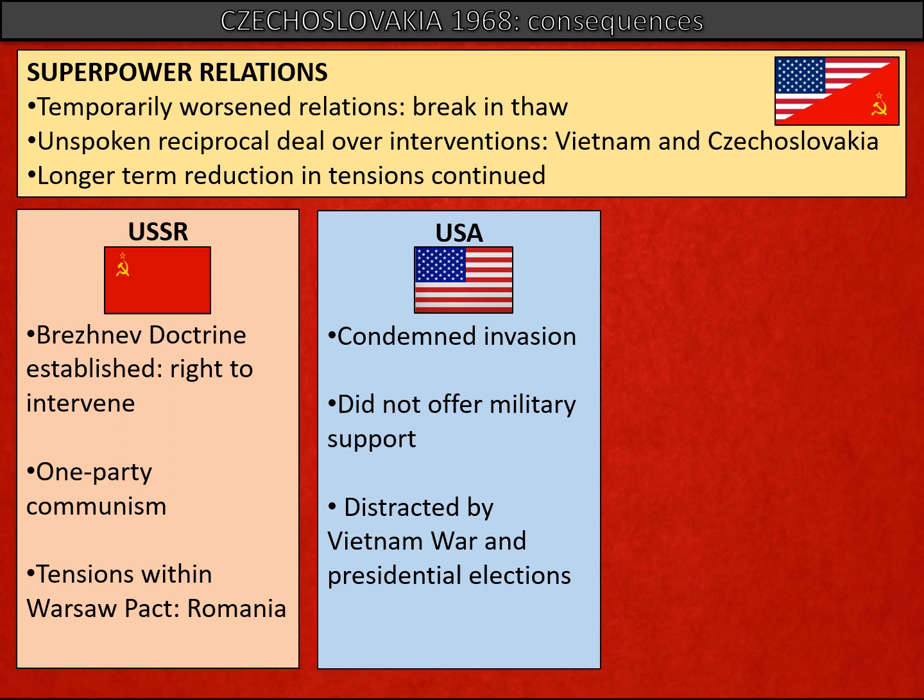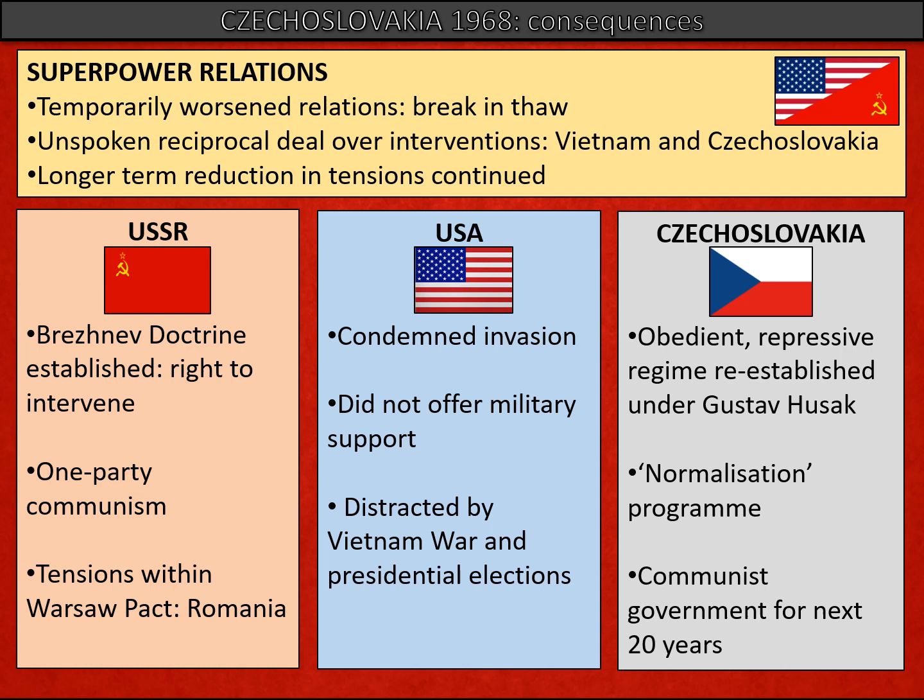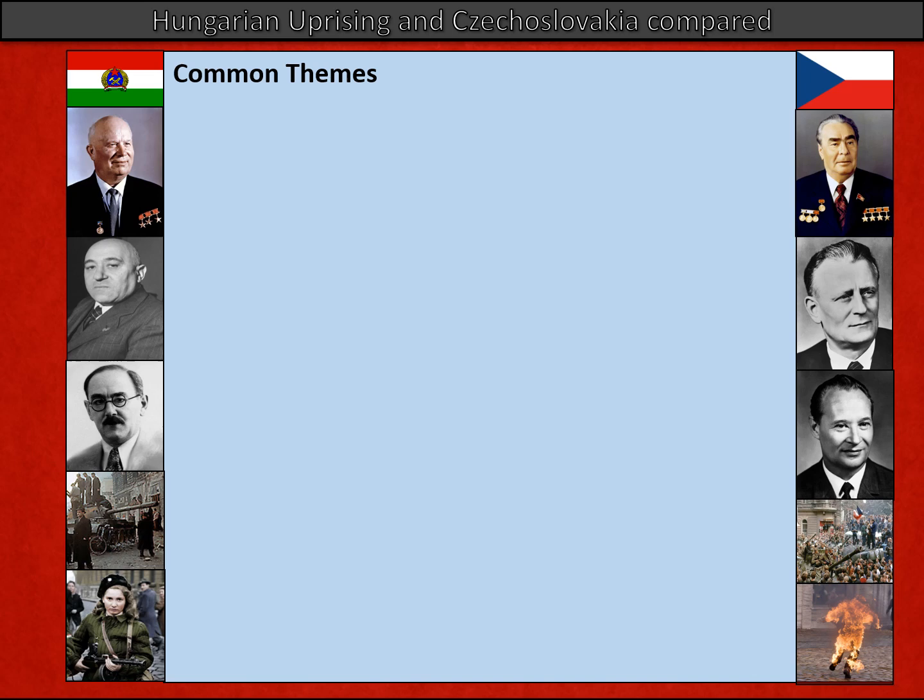For the USA, they condemned the invasion but did not offer any military support — partly because America was too distracted with Vietnam, and secondly there was a presidential campaign going on. Lastly, for Czechoslovakia itself, a hardline regime was quickly re-established. The normalisation programme ensured that any of Dubček's reforms were short-lived, and Czechoslovakia was subjected to hardline communist rule for the next 20 years.